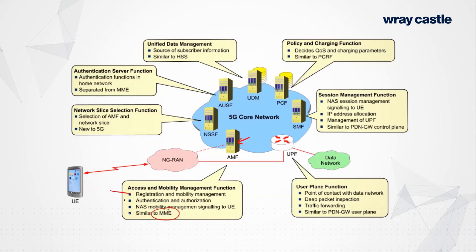The AMF is responsible for things like registration and mobility management, so it knows where the user equipment is and knows the identities of user equipments. It handles authentication and authorization to access network resources, and there is non-access stratum mobility management as well — doing re-registrations, keeping track of the tracking area the mobile is in. So it knows who the mobile is, where the mobile is, and more or less what the mobile is doing.